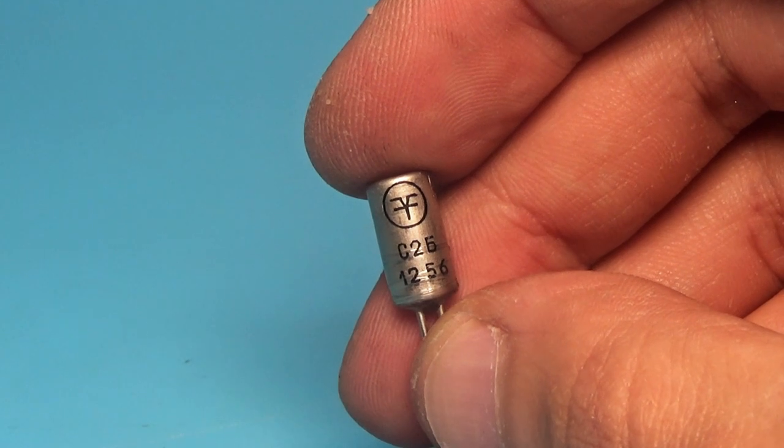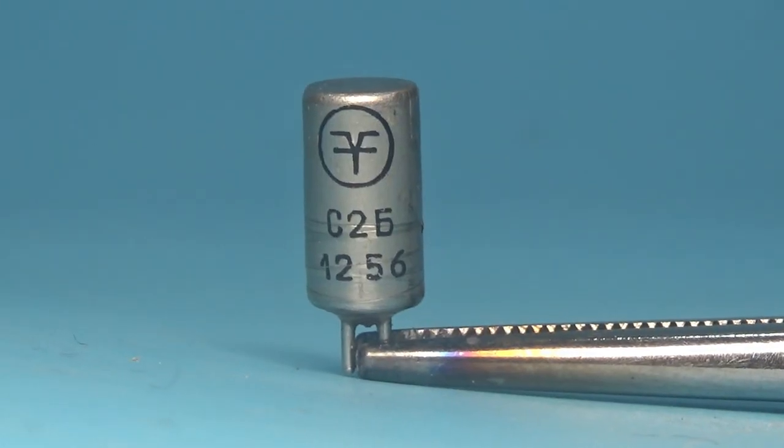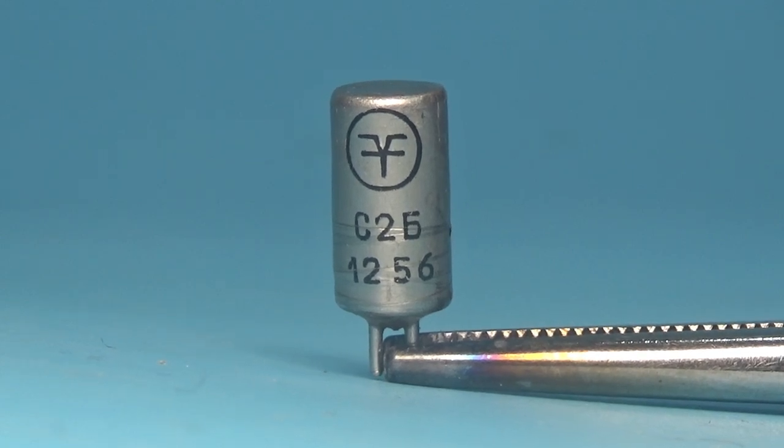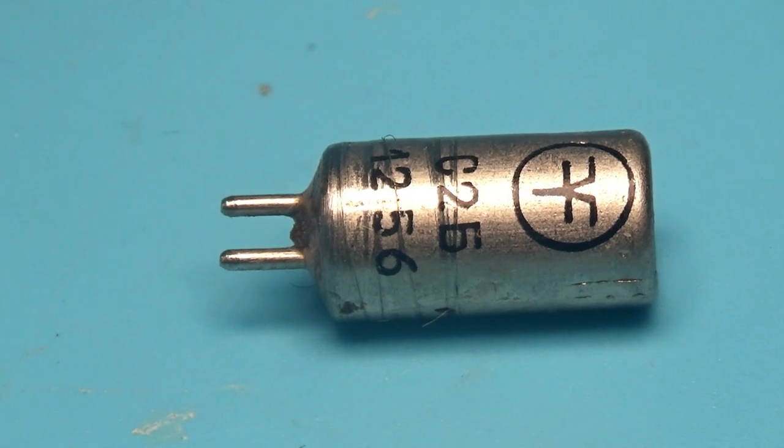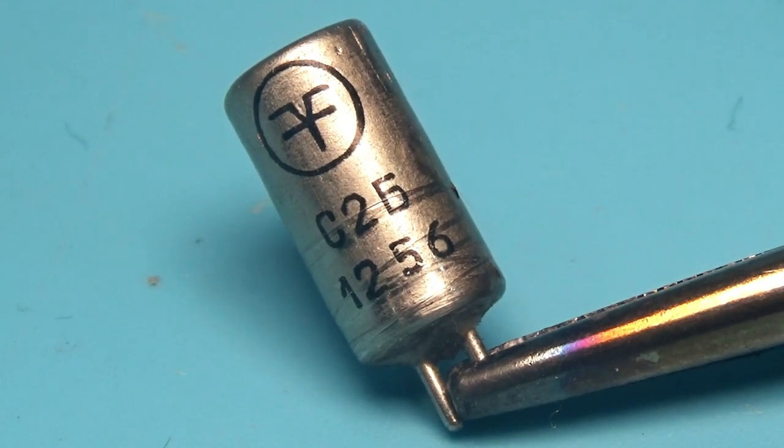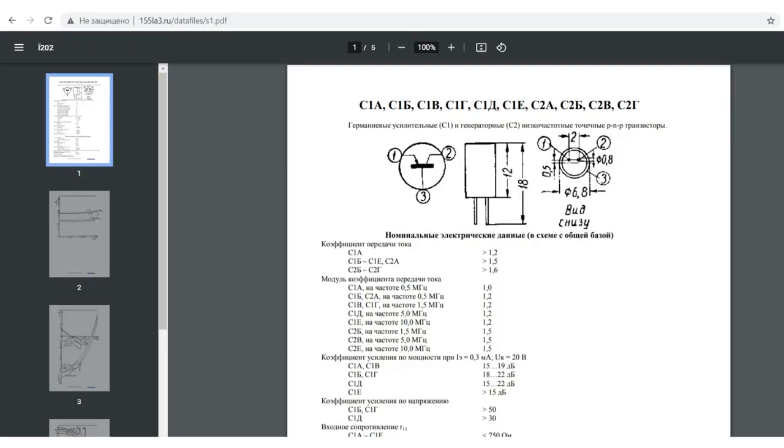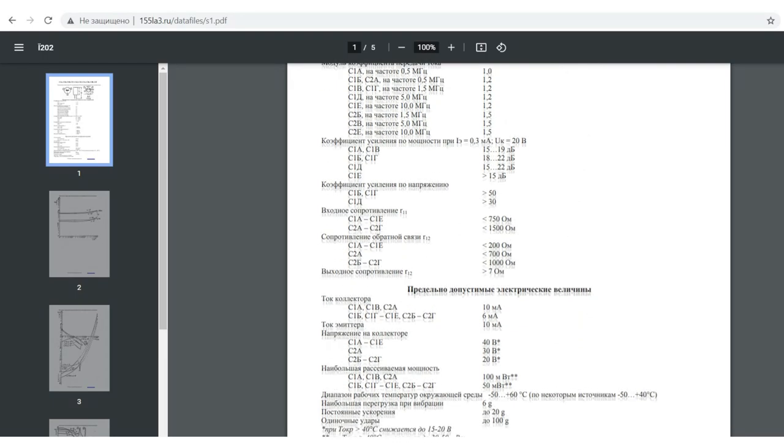This is first Soviet mass transistor C2, in my case C2B. It can be easily confused with an ordinary capacitor. This transistor was released back in 1956 before there were only all sorts of laboratory samples. They had very modest parameters, a gain of about one and a half, a collector current from 6 to 10 milliamps.